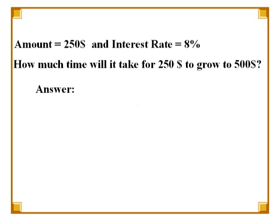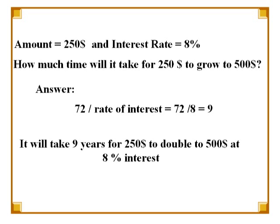Let's take another example. Suppose you have $250 invested at 8% interest, and you want to know when this will grow to $500. Just divide 72 by 8. This gives us 9, which is the number of years it will approximately take to double your money at 8% interest.